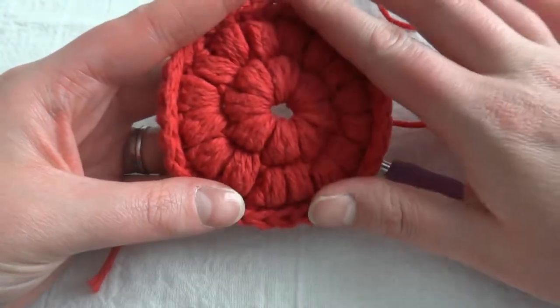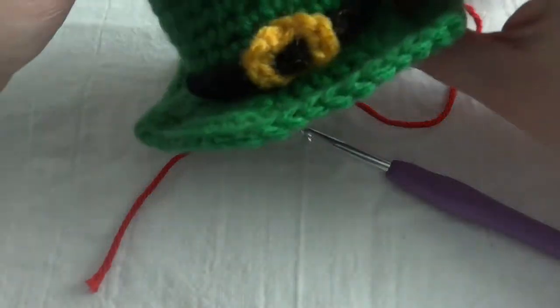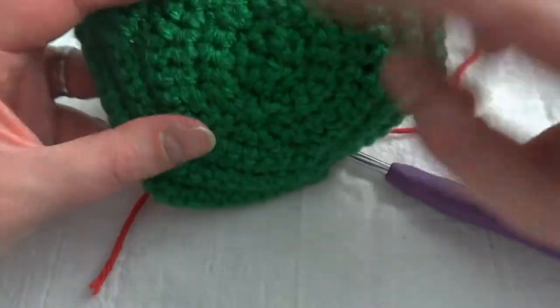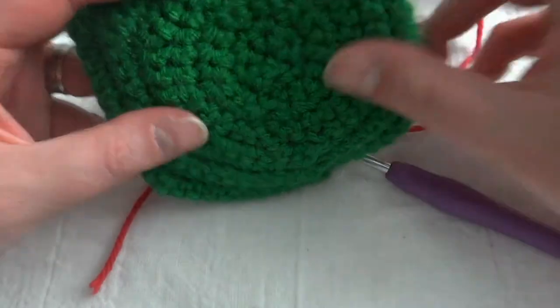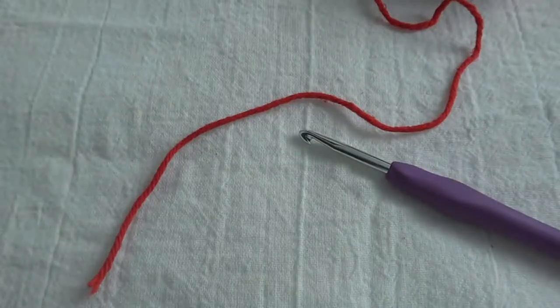For example, I used it for my cotton face scrubby pattern as well as these beer koozies. So you just use it to get a really tight hole in the center and I just use it for any project that's in the round.